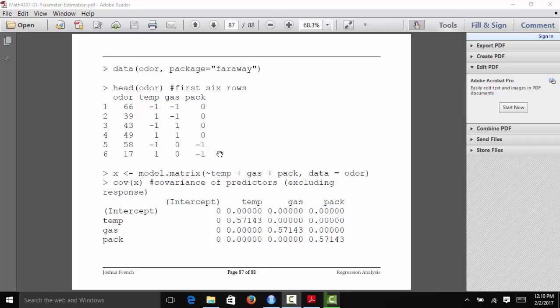First of all, let's just look at our data. It's the odor data in the faraway package. We load it, we look at the first six rows by using the head function. You can see that we have negative 1, 0, positive 1, etc. Those are the values of all of our variables. And then we have the measurements related to the odor.